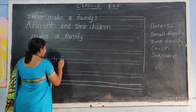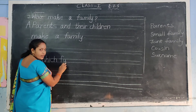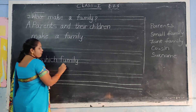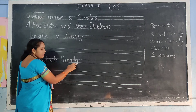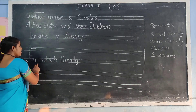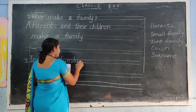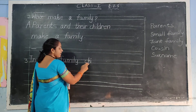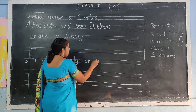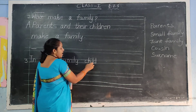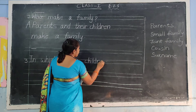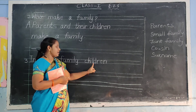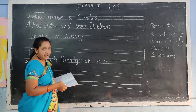F-A-M-I-L-Y — family. In which family? Finger gap. C-H-I-L-D-R-E-N — children. Children. In which family children?